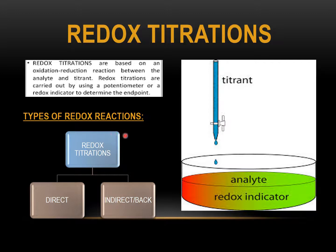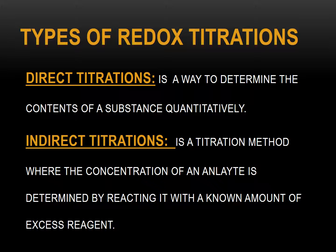Basically, redox titrations are of two types: direct and indirect. Indirect titrations can also be called back titrations. Direct titration is a way to determine the contents of a substance quantitatively. Indirect titration is a titration method where the concentration of the analyte is determined by reacting it with a known amount of excess reagent. That excess reagent is allowed to react with the analyte.